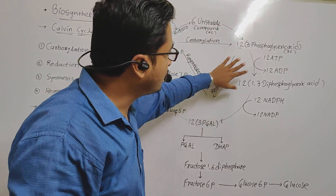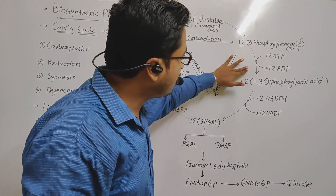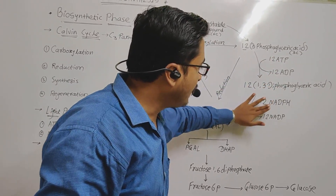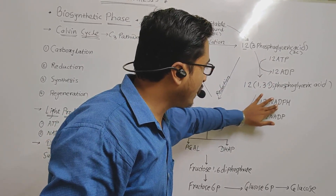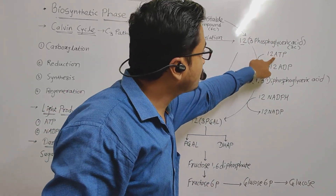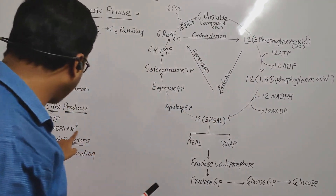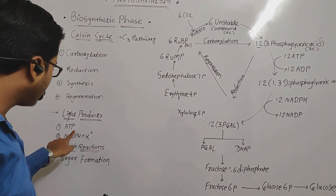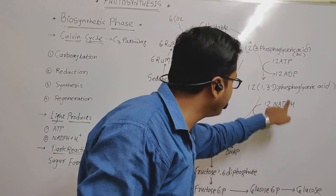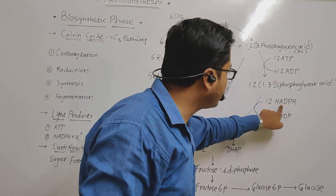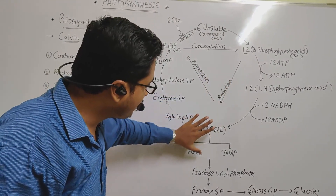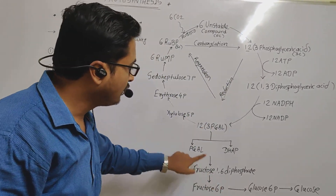In the reduction process, in the first step there is utilization of ATP, and in the second step there is utilization of NADPH. These are the products of the light reaction — I have written here that the products of the light reaction are utilized in the dark reaction, meaning in the synthesis of sugar. After reduction, there is the process of synthesis.